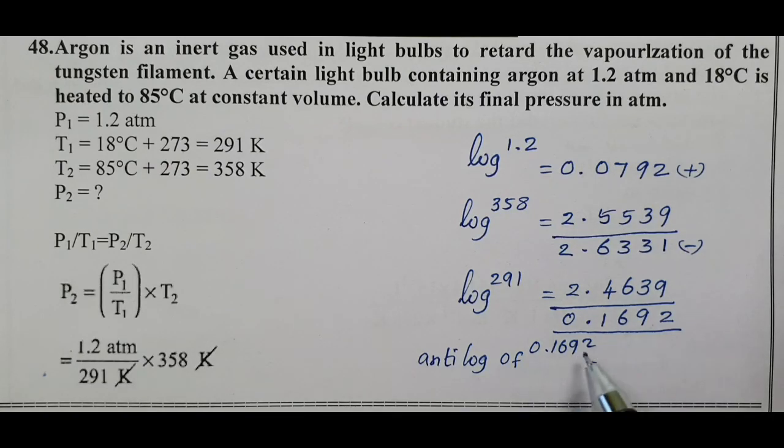Antilog of 0.1692. For 0.169, we get 1476. Mean difference 2 gives us 1, so adding we get 1477, which is 1.477.